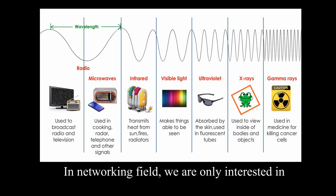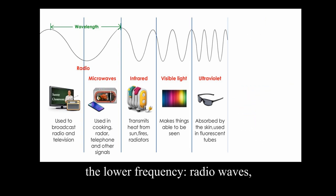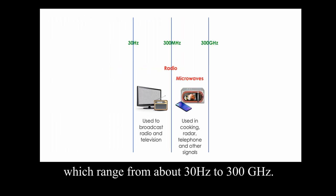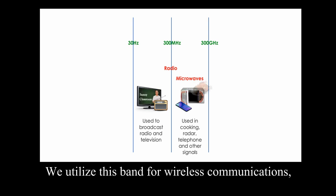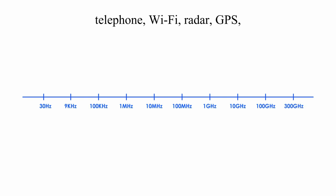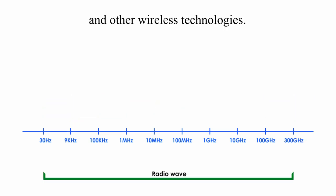In networking field, we are only interested in the lower frequency radio waves, which range from about 30 Hz to 300 GHz. We utilize this band for wireless communication such as radio and television, telephone, Wi-Fi, radar, GPS, and other wireless technologies.